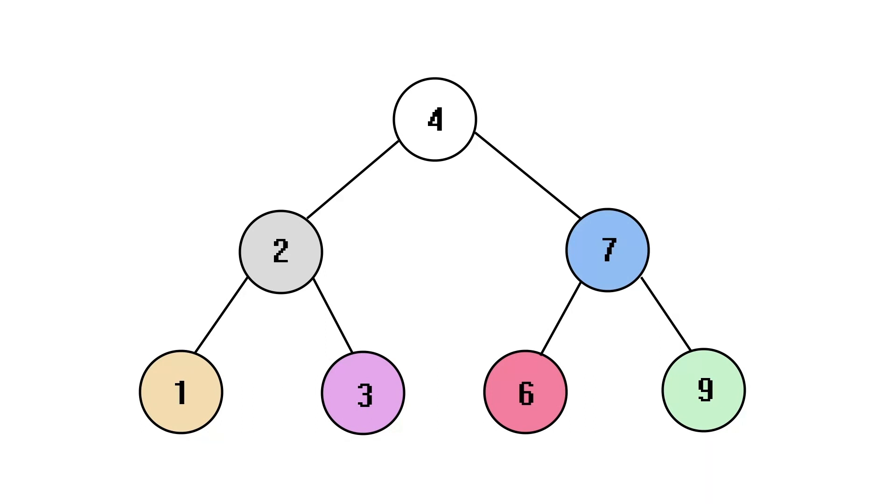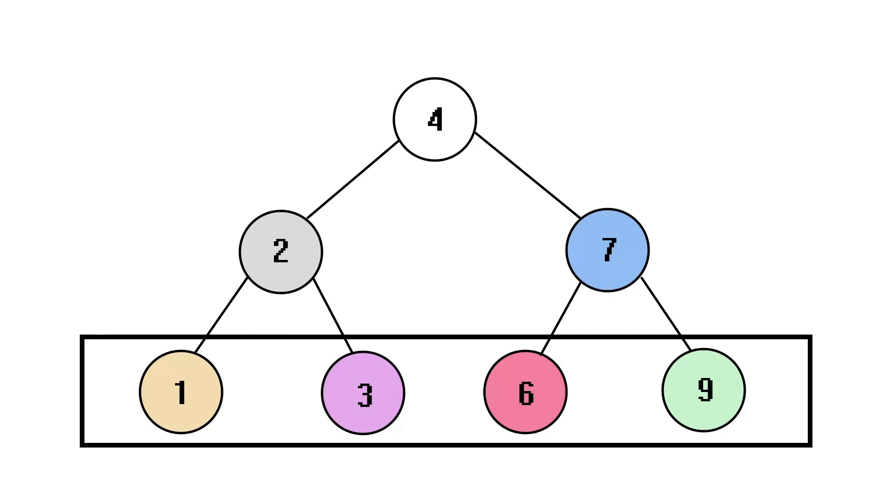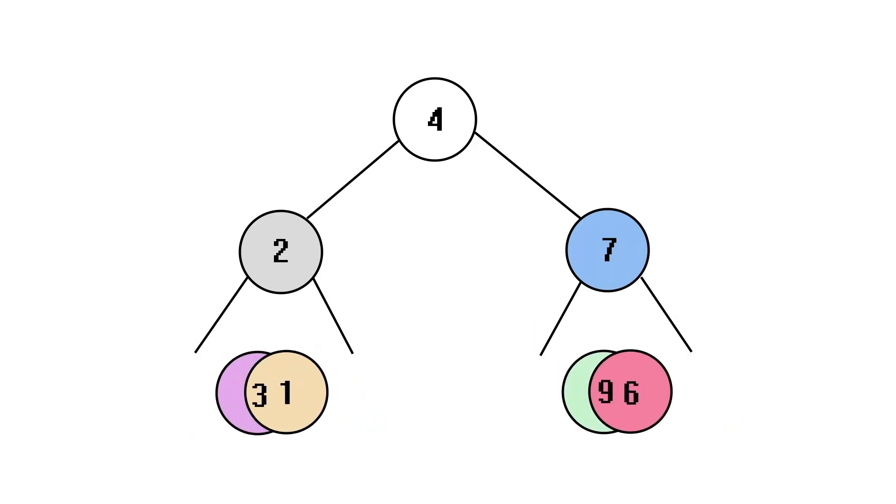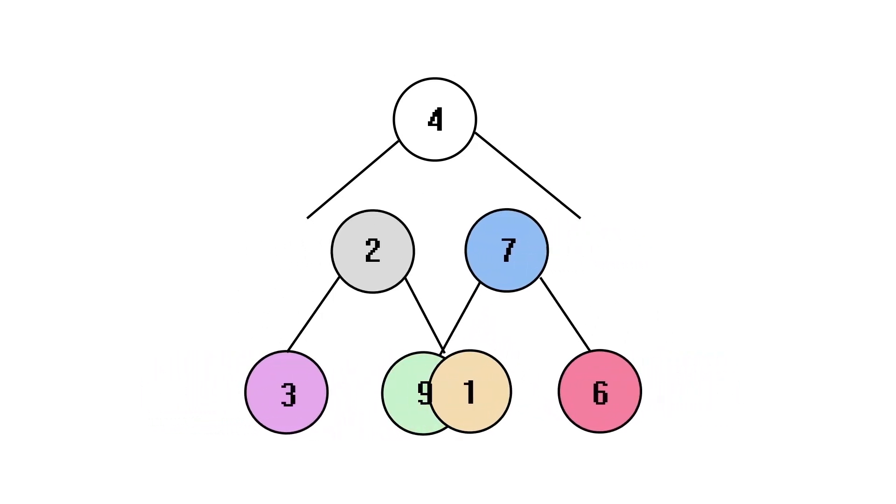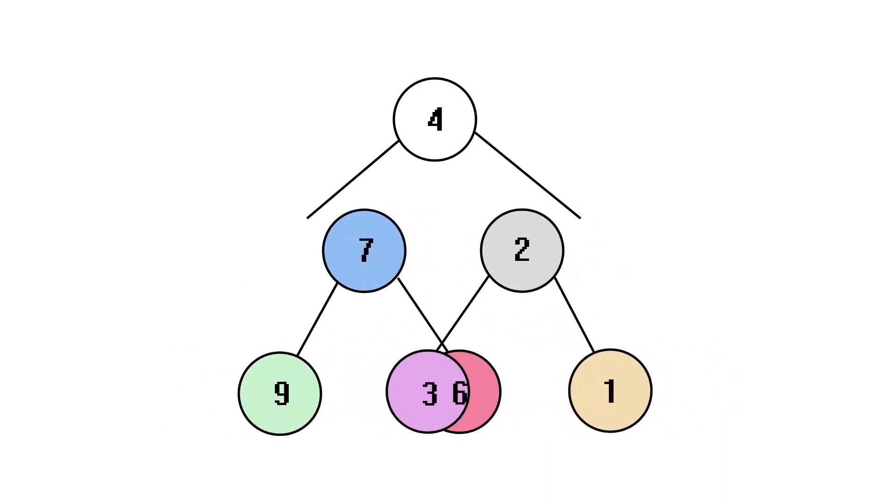We then continue the process with the same approach, and we observe that to invert these subtrees, we only need to invert two leaf nodes, which can be done by directly swapping their leaves. After finishing inverting these subtrees, we go one level up and swap their position.